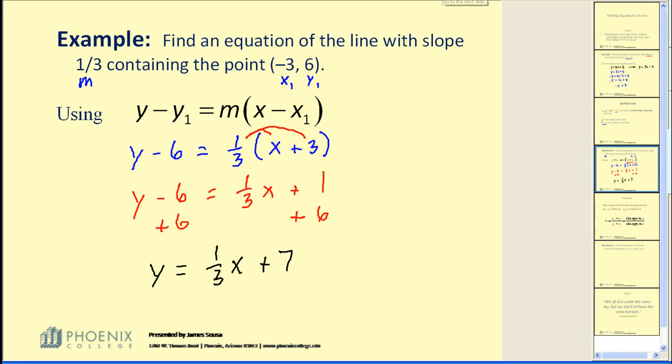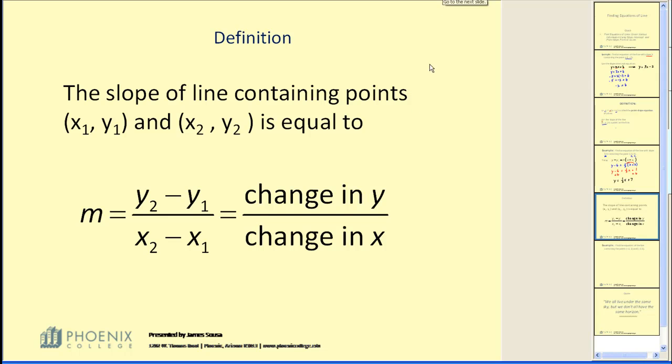Let's review slope now. You may recall the formula to find the slope of a line given two points. If the two points are (x₁, y₁) and (x₂, y₂), the slope is equal to the difference of the y-coordinates divided by the difference of the x-coordinates. Sometimes this is written as the change in y over the change in x, or sometimes rise over run.